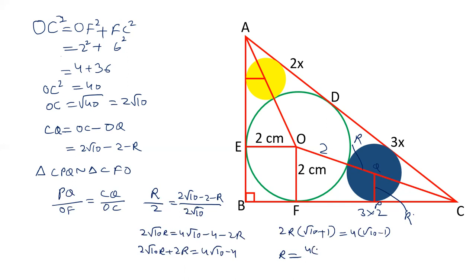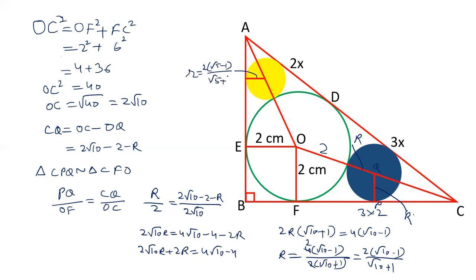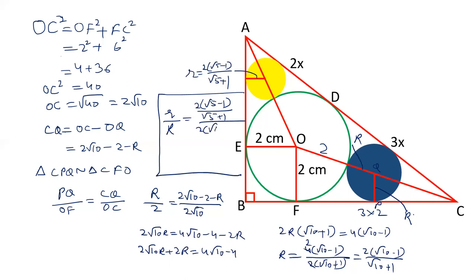Therefore R = 4(√10 − 1) / (2(√10 + 1)) = 2(√10 − 1)/(√10 + 1). The value of small r is 2(√5 − 1)/(√5 + 1). The ratio of their radii r:R = [2(√5−1)/(√5+1)] / [2(√10−1)/(√10+1)] = [(√5−1)(√10+1)] / [(√5+1)(√10−1)].